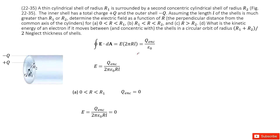Welcome to my channel. I'm Zhang Jingxu. Let's look at problem 35 in chapter 22. Chapter 22 is about Gauss's law. We have a cylindrical shell — the inner radius is R1, outer radius is R2. The inner surface carries positive charge Q, and the outer shell carries negative Q. The length is L.